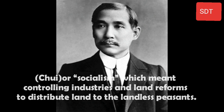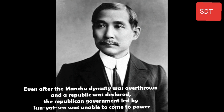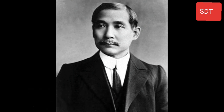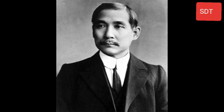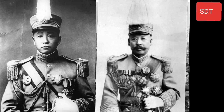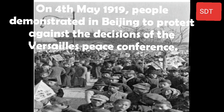Even after the Manchu dynasty was overthrown and a republic was declared, the republican government led by Sun Yat-sen was unable to come to power. The country was soon controlled by regional military powers called warlords. The social and political situation continued to be unstable in China.